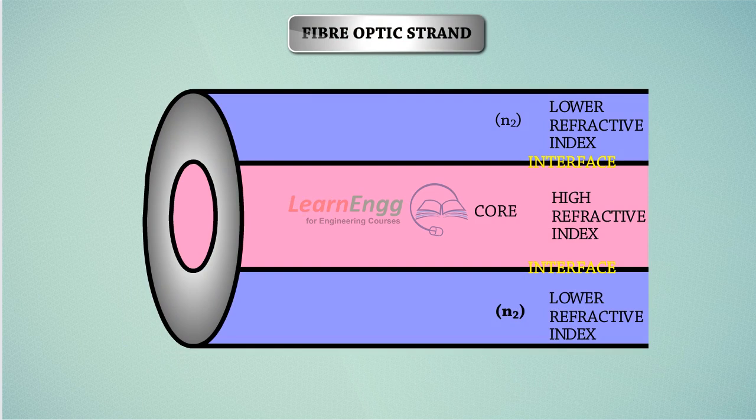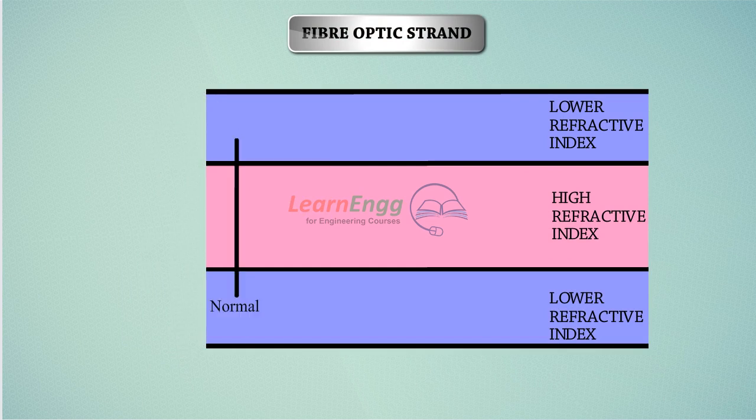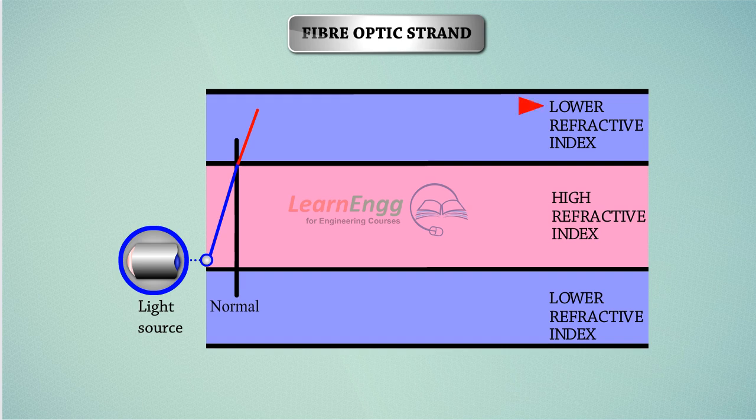The core has a higher refractive index than the surrounding cladding. The light ray from the core will increase in speed in the cladding, which has a lower refractive index. Notice, if the angle of incidence becomes greater, the angle of refraction approaches the boundary or interface. If the angle of incidence is such that the refracted light ray travels along the boundary between core and cladding, it is known as the critical angle.